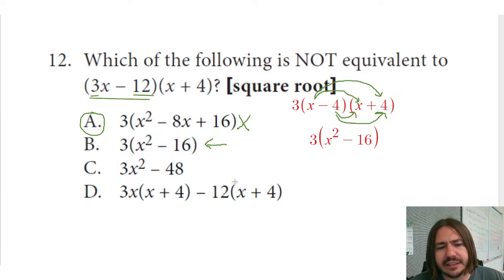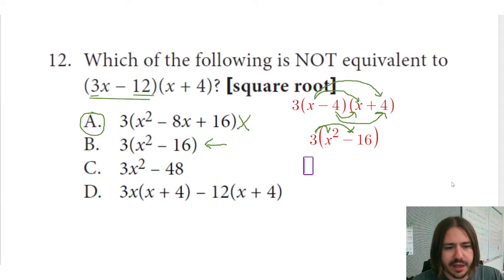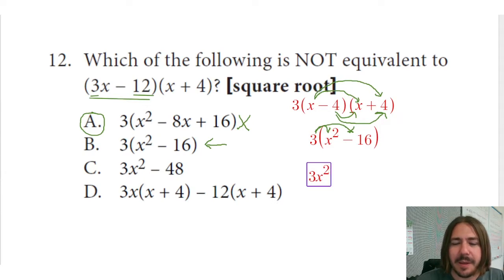But just to double check C and D real quick, if I multiply this 3 back in, if I distribute the 3 here, multiply 3 by x squared and 3 by negative 16, I get 3x squared minus 48. So we can say, okay, well C is also equivalent. These are the same as the original expression.